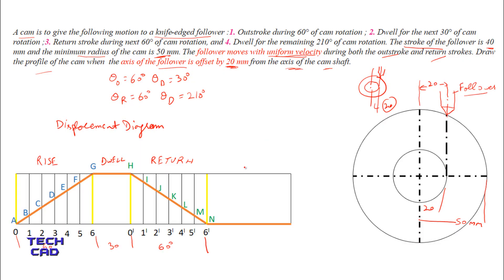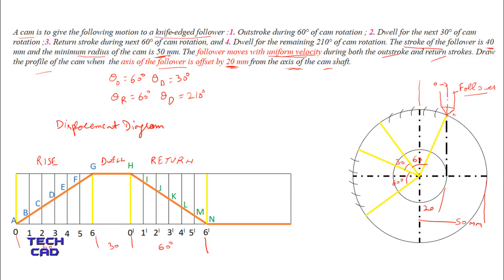Now mark the outstroke angle, dwell angle, and return angle on the diagram. For the outstroke angle, connect a line from the center of the cam towards the knife edge point of the follower and mark a 60-degree angle. Then mark the 30-degree dwell angle and the 60-degree return angle. Divide both the 60-degree outstroke and the 60-degree return stroke angles into six equal parts, as per the displacement diagram, and label them accordingly.